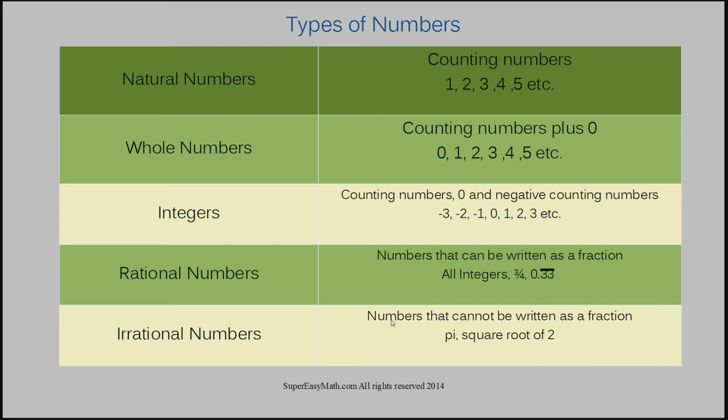Irrational numbers are numbers that cannot be written as a fraction, like pi. Remember pi is 3.1415 and so on and so on and so on. Pi never ends when you're talking about it in a decimal form. Because it doesn't end in a decimal form, it cannot be written as a fraction. Because it can't be written as a fraction, it's irrational. Another example of an irrational number is the square root of two. If you were to try to calculate the square root of two in a calculator, you're going to get a long decimal that does not end. Well, I mean it will end in your calculator because your calculator only has so many digit places that it can hold a value. So if you were to work it out by hand, it would never end and because of that the square root of two is irrational.